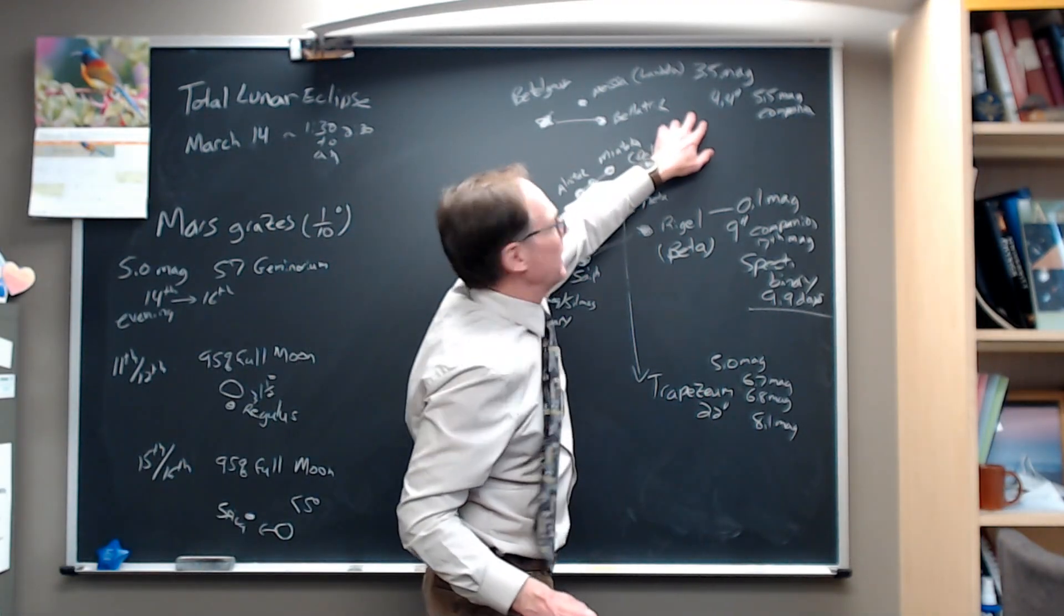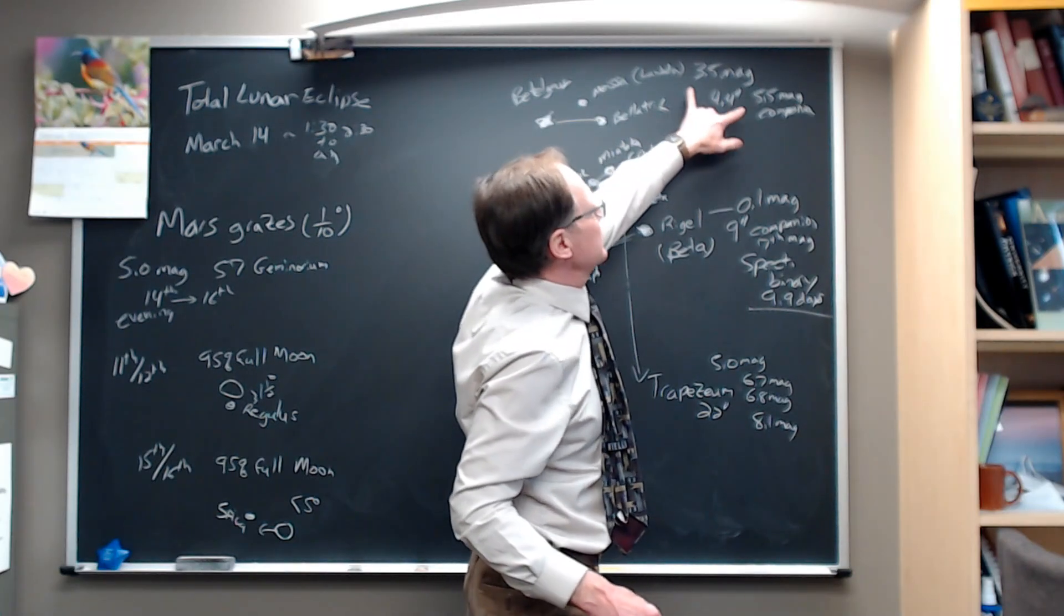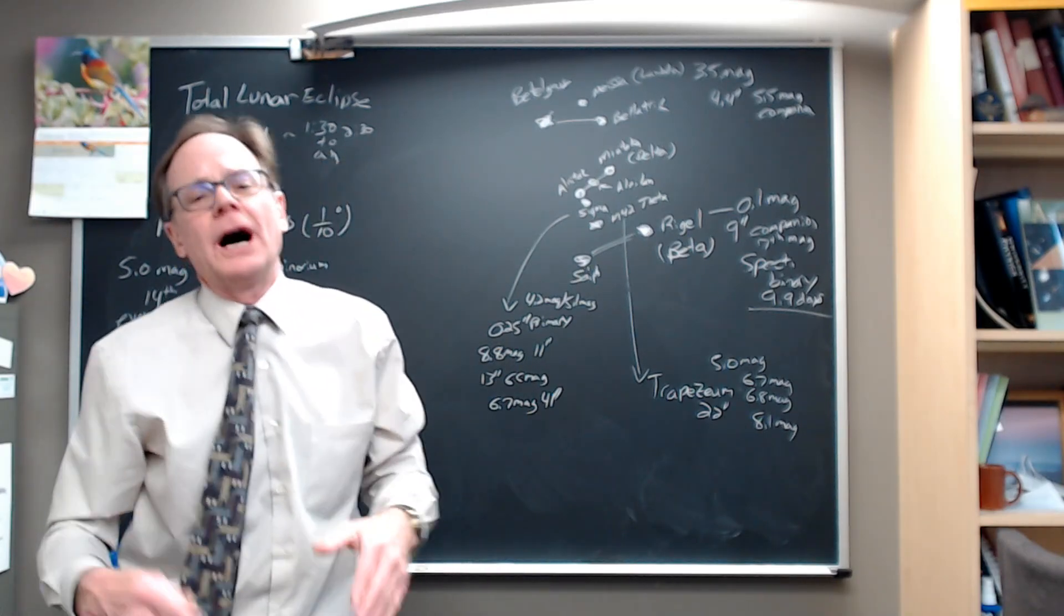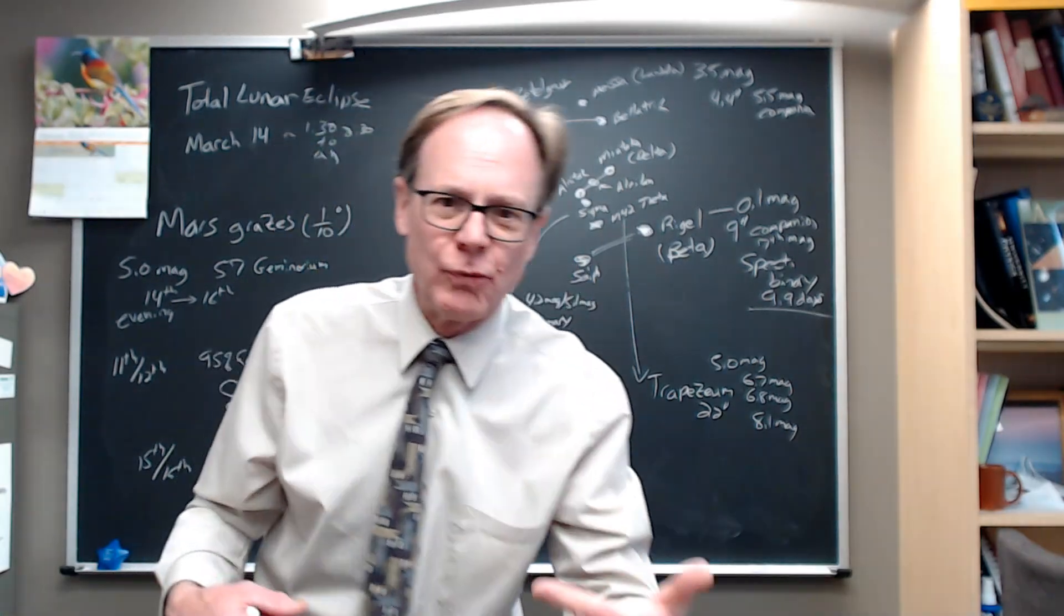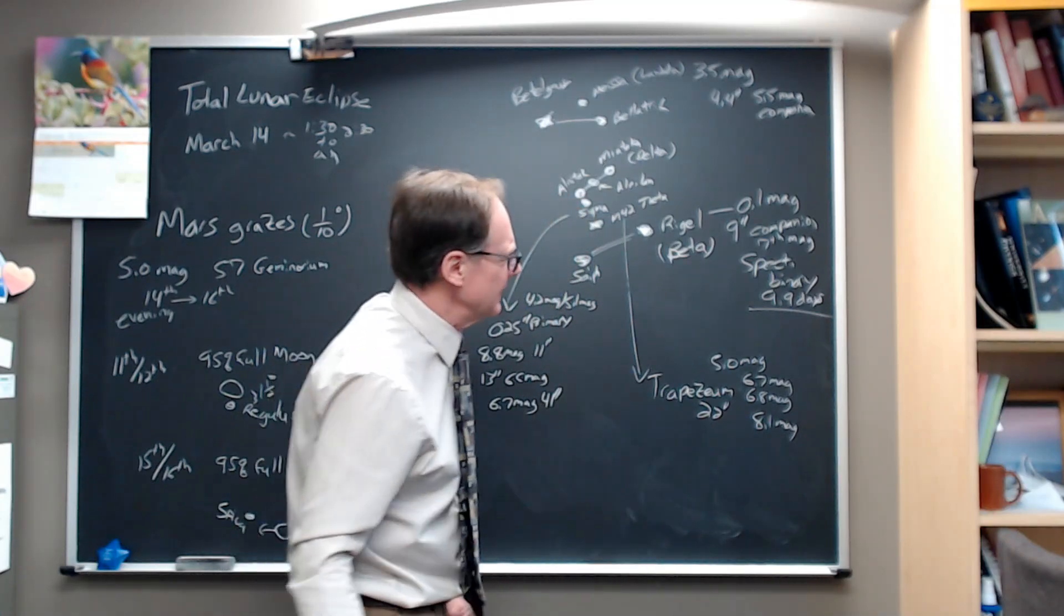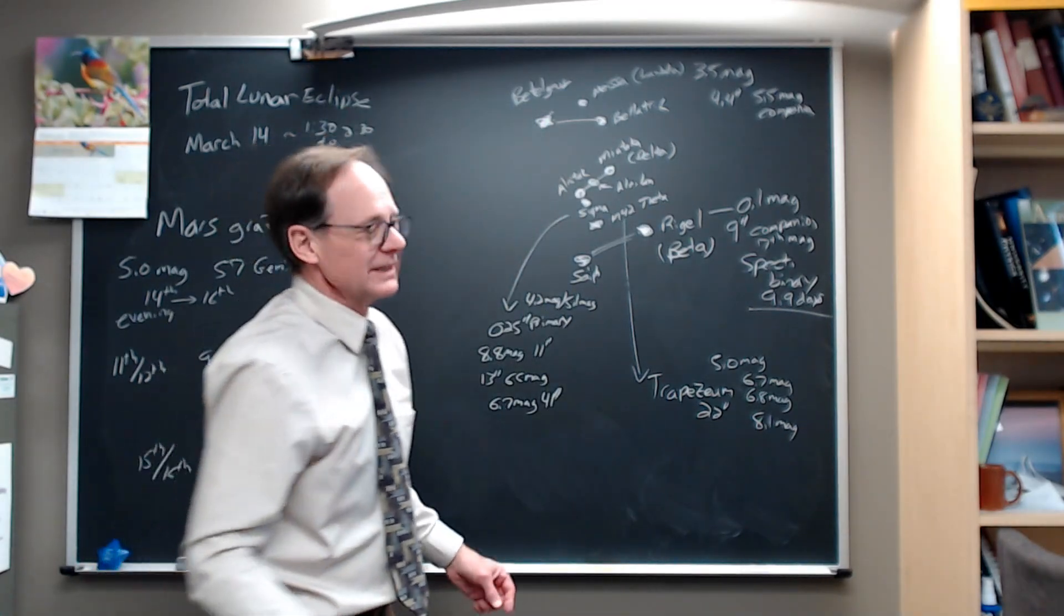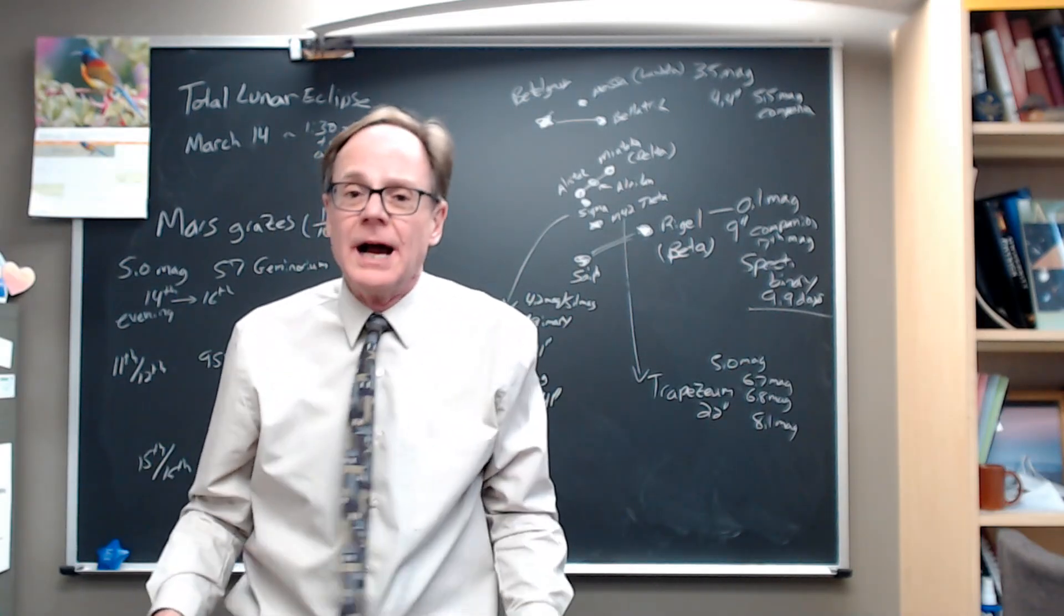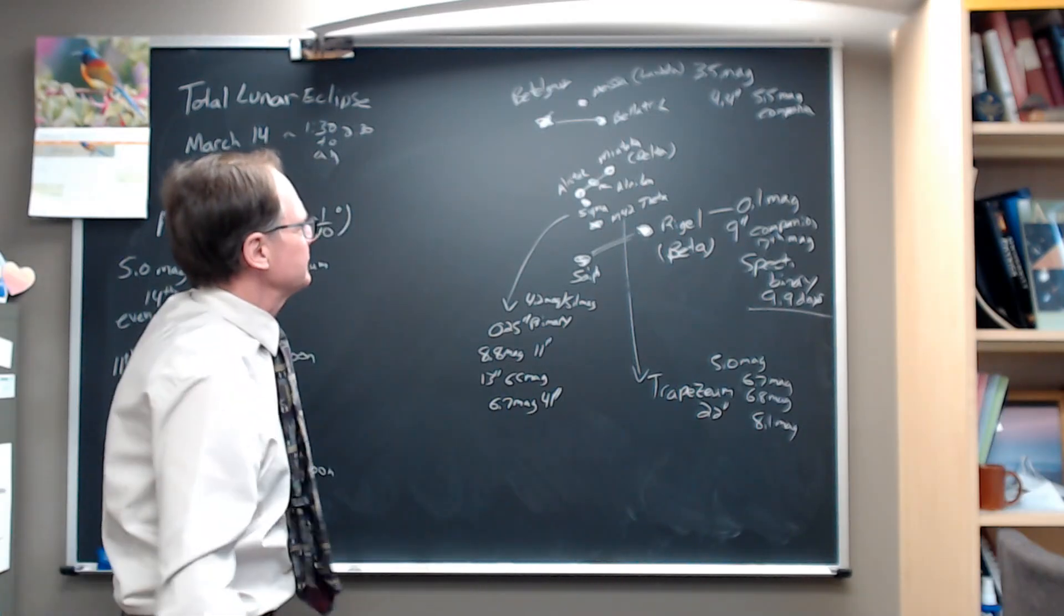This is a much easier binary star to split than is Rigel, because the two components aren't so vastly different in brightness. Every step in magnitude is a step of 2.5 in brightness. So five magnitudes is a factor of 100 in brightness. So the companion of Rigel is 600 times fainter than Rigel is. That's a big difference. This is not nearly as much. Two magnitudes is still a lot. It's still six times fainter, the companion, but easier to split. A good one to do. You've got your small telescope out to go after that.